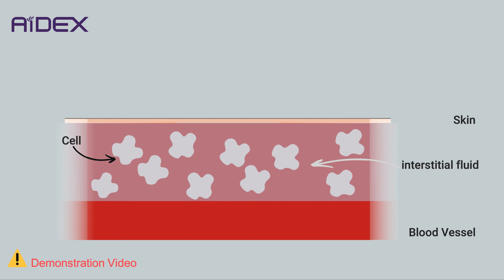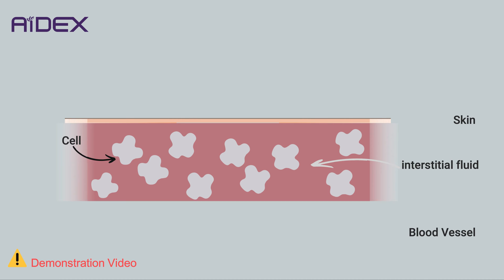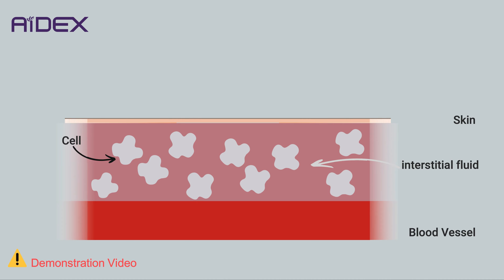In simpler terms, it acts as a bridge between the bloodstream and individual cells, facilitating the transport of oxygen, nutrients, salts, hormones, water, and other substances. It also assists cells in getting rid of carbon dioxide.